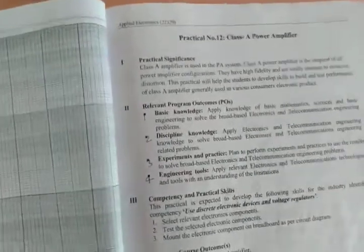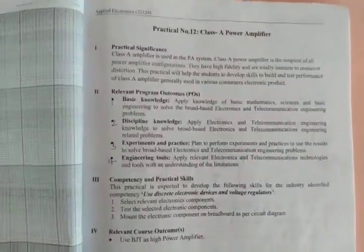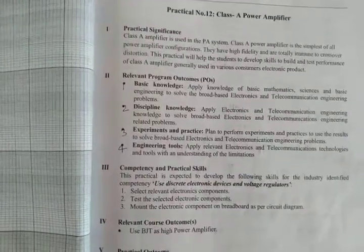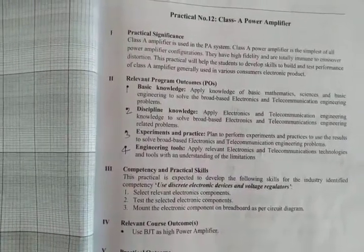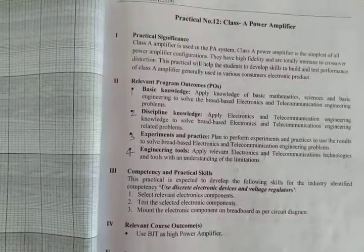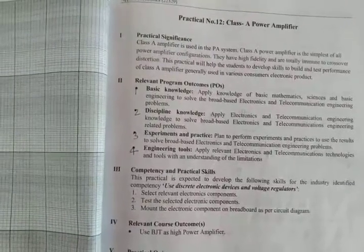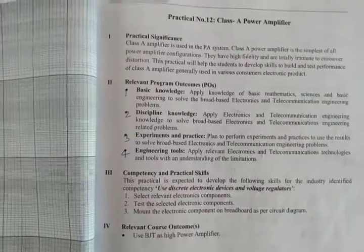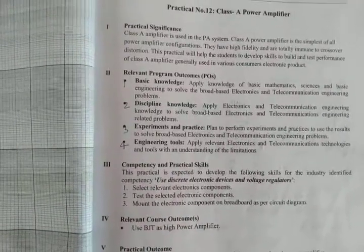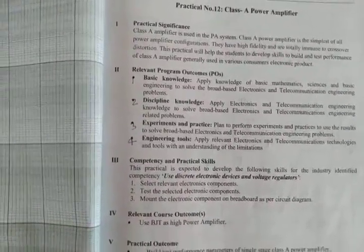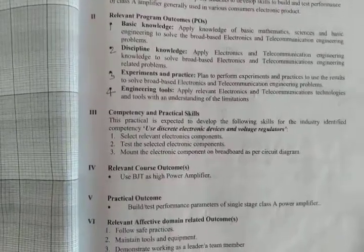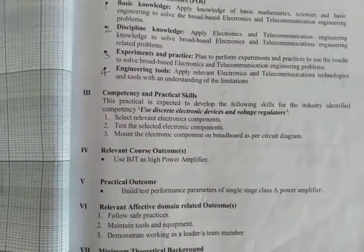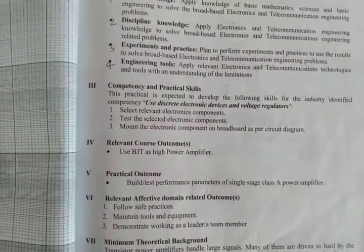Before we perform the practical, we must understand what are the competencies required. First and foremost, it is to use discrete electronic devices and voltage regulators by performing this practical. The other relevant course outcome is to use BJT as high power amplifier. And practical outcome is to build or test performance parameters of single stage Class A power amplifier.